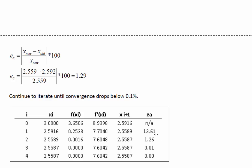We have an error of 1.26%, so we take that value 2.5587. The function is actually 0 out to 4 decimal places, and the function derivative is 7.6042. Our new guess is the same as our old guess with some rounding error, but our approximate relative error is 0.01%, far below 0.1%. The answer is 2.5587, accurate to 0.1% relative error using the Newton-Raphson method.